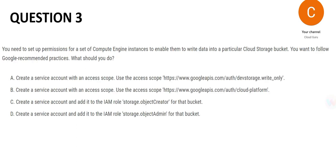Moving on to question 3, which is the last question of this part. You need to set up permissions for a set of Compute Engine instances to enable them to write data into a particular Cloud Storage bucket. You want to follow Google recommended practices. What should you do? There's a thumb rule for this: for any such questions, you shouldn't use access codes — more specifically, you should use an IAM role.